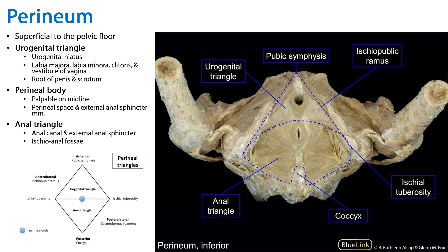So we've discussed the idea of sex as a continuum, as well as the perineum, the urogenital and anal triangles and some of their contents, and the perineal body. This is your summary slide. Thank you for your time.